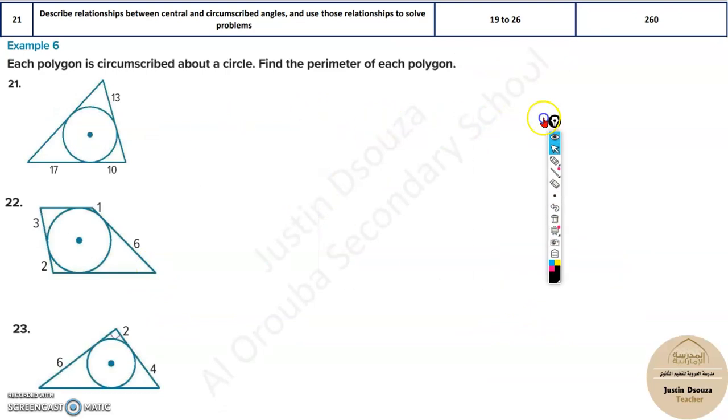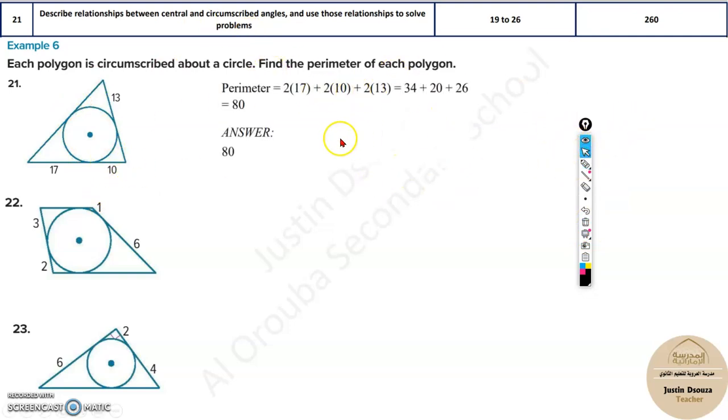Now over here, we have another type of problems. Each polygon is circumscribed about a circle. What circumscribed means is very simple. You're tightly fitting a circle inside a polygon such that all the sides touching the circle are tangents. So remember, all these are tangents to the circle. Now, we need to find the perimeter of each polygon. Over here, you must remember, this is a tangent. This is a tangent. This is a tangent. All are these tangents.